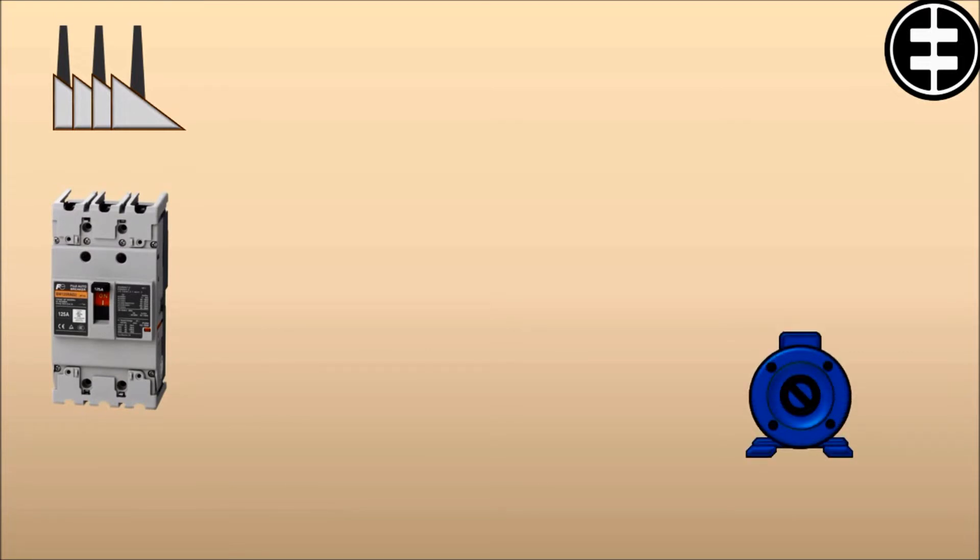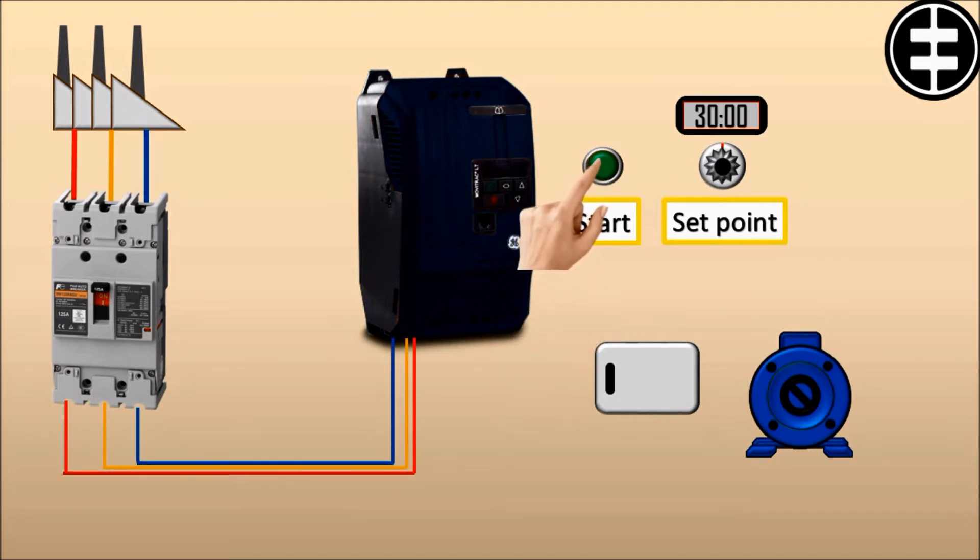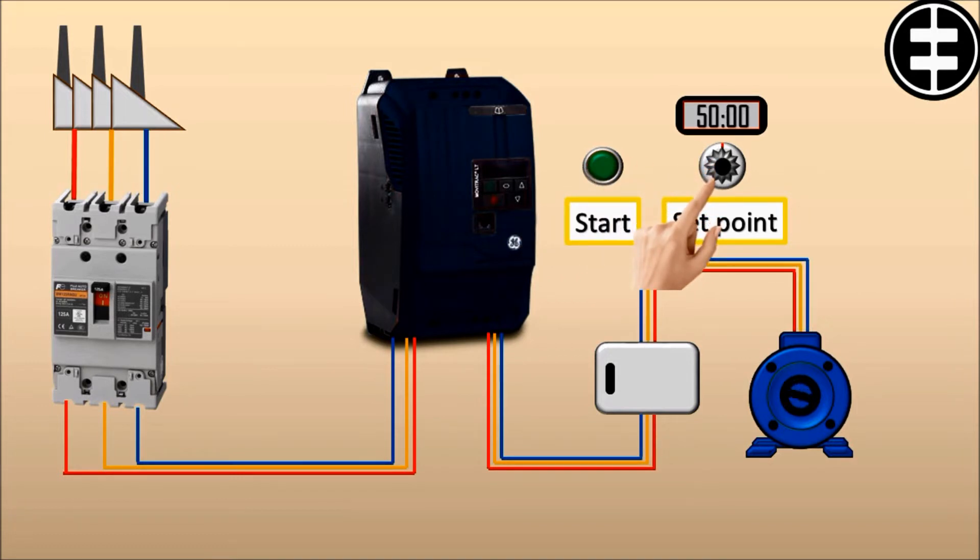But in some applications it's required to adjust the speed during operation, so we need a variable frequency drive. When we need to start a motor, the power is connected to the circuit breaker input, and the breaker output is connected to the VFD. If the motor is required to run at full speed, the VFD will transfer the power to the motor with the same frequency, but the VFD can also cut down the motor speed by reducing the output power frequency, say to 30 Hz from 50 Hz, so the motor will slow down. The VFD is able to change the output speed again and again during operation.